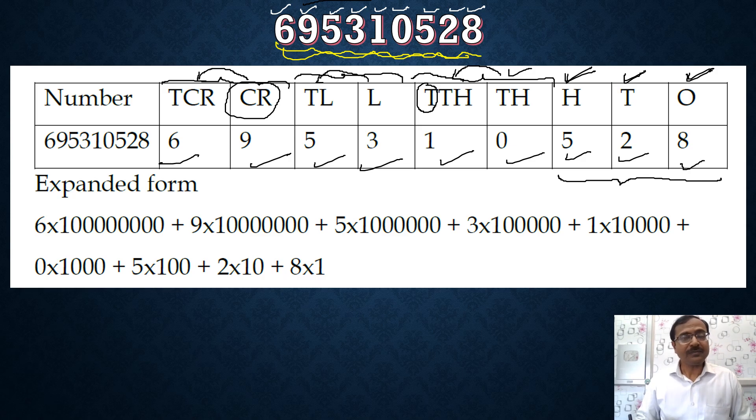Now I know that ten crore is one followed by eight zeroes, right? So whatever number we have written here, 6, that will be multiplied by ten crore. And then remember to put the plus sign always. Then next digit is 9. Now keep on reducing one zero when you write the second box in the expanded form. So 9 times one crore plus then we have the 5, so 5 times ten lakh, and then 3 times one lakh.